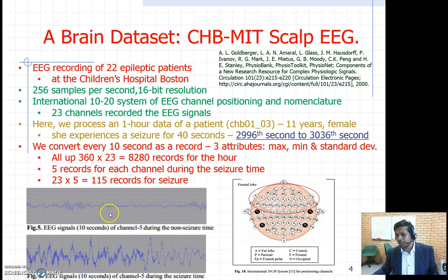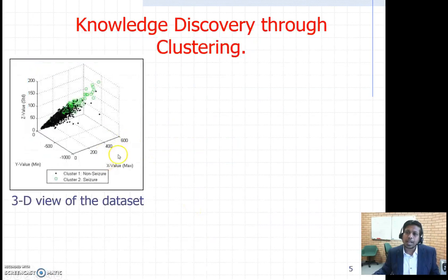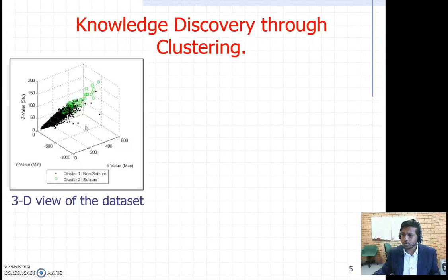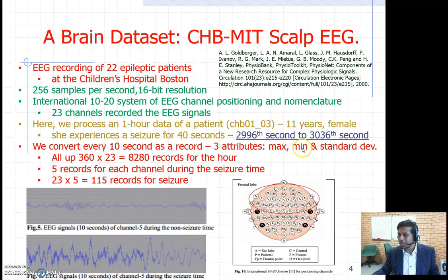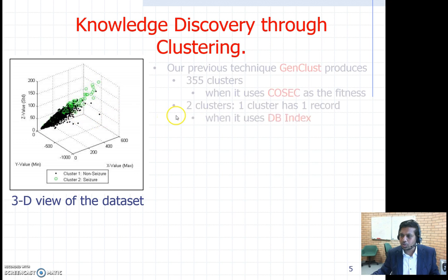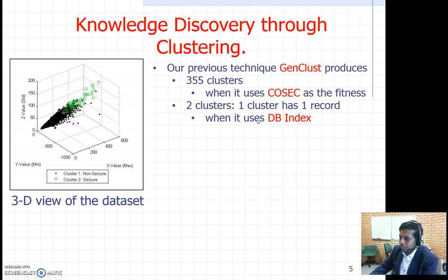To discover knowledge, we plot those 8280 records into a three-dimensional plane. We converted each 10-second epoch into a record with three values: max, mean, and standard deviation of the signal. The standard deviation of a seizure signal will be higher. In a three-dimensional figure, the green circles represent seizure records and the black dots are non-seizure records.